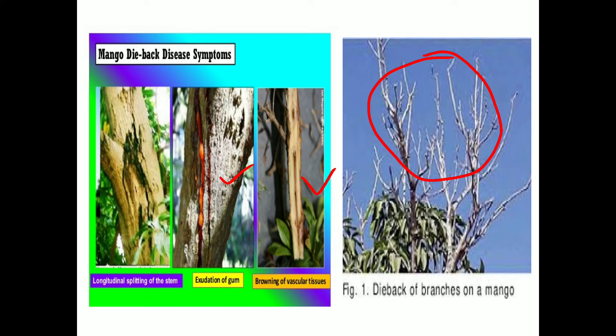For management of dieback, we have to prune or cut the diseased twigs or leaves, and then spray one percent Bordeaux mixture. Second, we must select scions from healthy trees, which helps keep the disease under check. Lastly, cleanliness and field sanitation should be practiced by burning plant debris regularly.